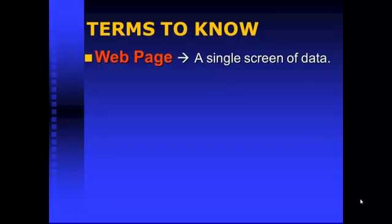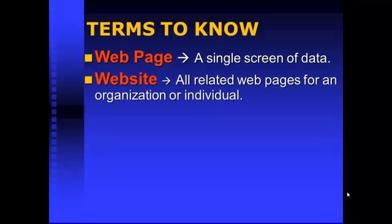What is a web page? Well, it's one screen of data. When you're searching information, a web page is basically one screen of information. Whereas a website is all those related pages put together for an individual or an organization — all those pages put together create that website.